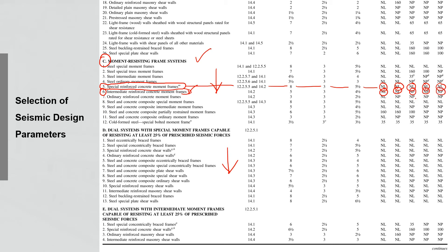If you are in seismic design category D, you cannot use the intermediate reinforced concrete moment frame as your structural system. If your risk category, site class, and hazard parameters result in SDC D, you cannot use IMRF. But in SDC B or C you can use it. For ordinary reinforced concrete frames, there is no limit in SDC B, but in SDC C, D, E, and F it is not permitted — so even in SDC C the OMRF is not permitted.